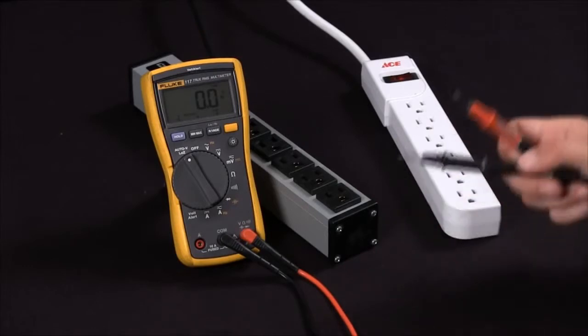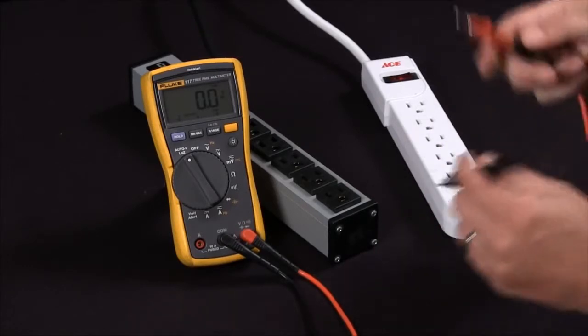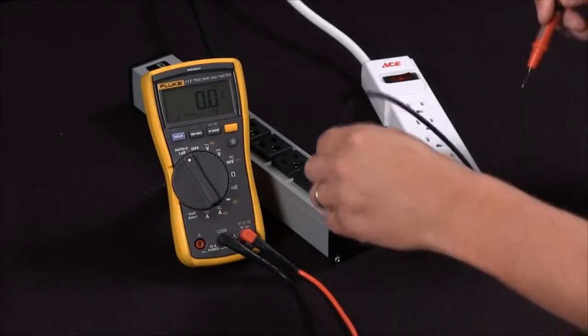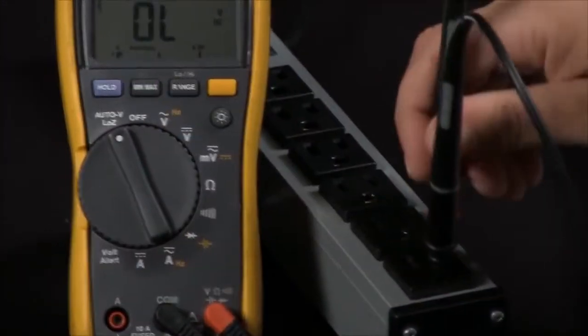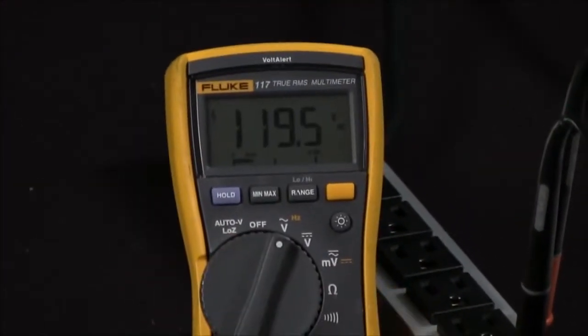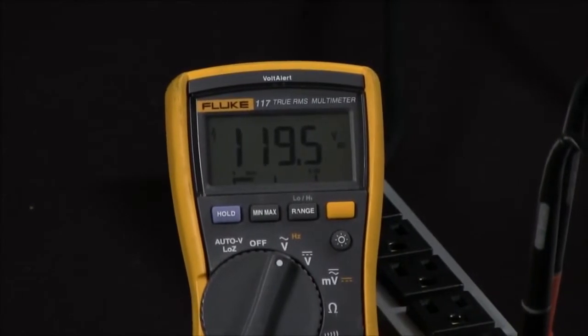In our first measurement we're going to go with a known good source with a good ground. We'll go ahead and turn this to voltage and as you can see we're getting a 120 reading.